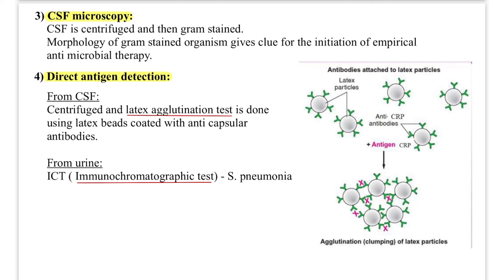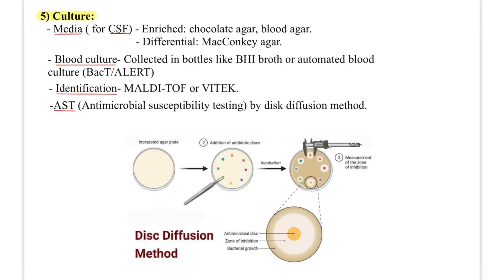From urine, the immunochromatographic test is used particularly for Streptococcus pneumoniae. Culture media used for CSF: enriched media such as chocolate agar and blood agar, and differential media such as MacConkey agar. Blood culture is collected in bottles like brain-heart infusion broth or automated blood culture (BacT/Alert). Identification is by automated methods such as MALDI-TOF or VITEK.